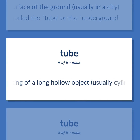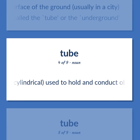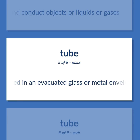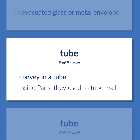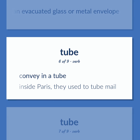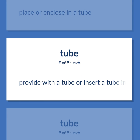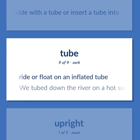Tube (continued): Conduit consisting of a long hollow object, usually cylindrical, used to hold and conduct objects or liquids or gases. Electronic device consisting of a system of electrodes arranged in an evacuated glass or metal envelope. Convey in a tube. Example: Inside Paris, they used to tube mail. Place or enclose in a tube. Provide with a tube or insert a tube into. Ride or float on an inflated tube. Example: We tubed down the river on a hot summer day.